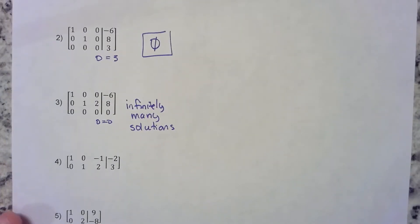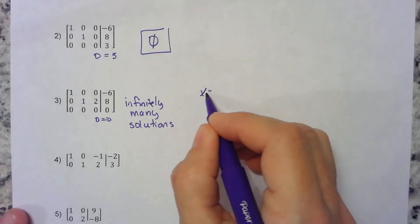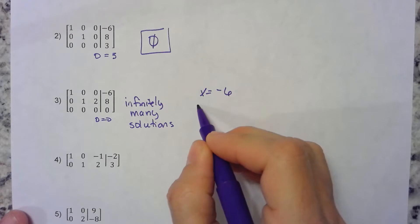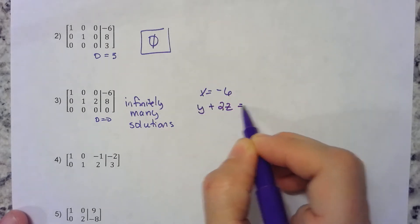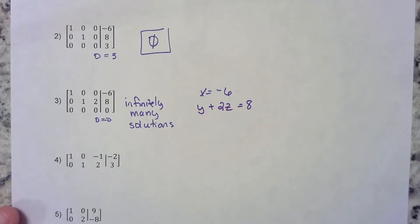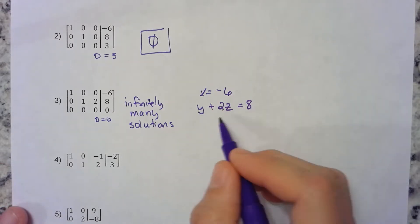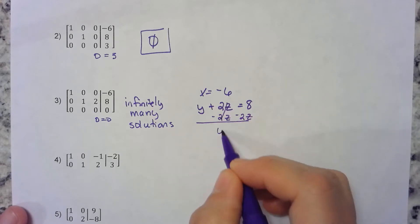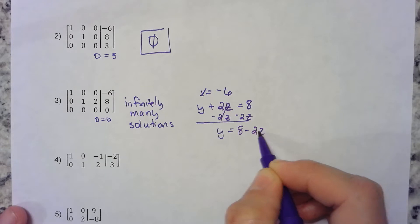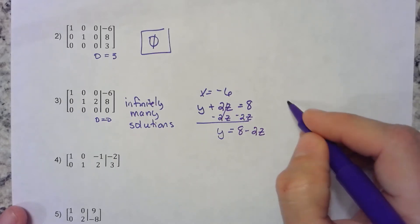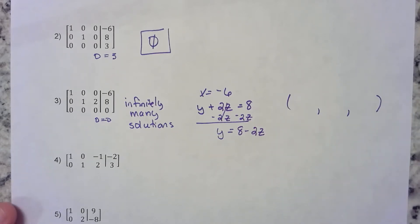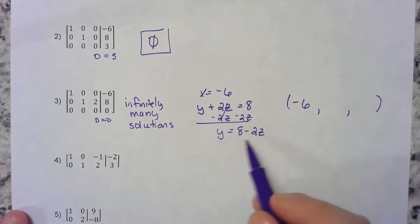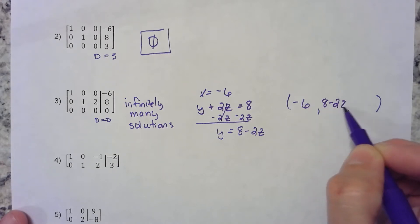We already know that x is negative 6—that's given to us. This next line tells us that y plus 2z is equal to 8. I could actually solve this for y very easily by subtracting 2z from both sides, so y is equal to 8 minus 2z. Remember we have an x, a y, and a z in our ordered triplet.